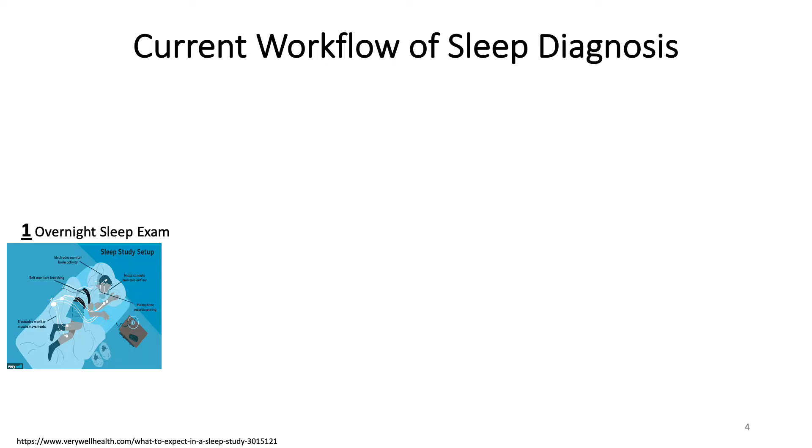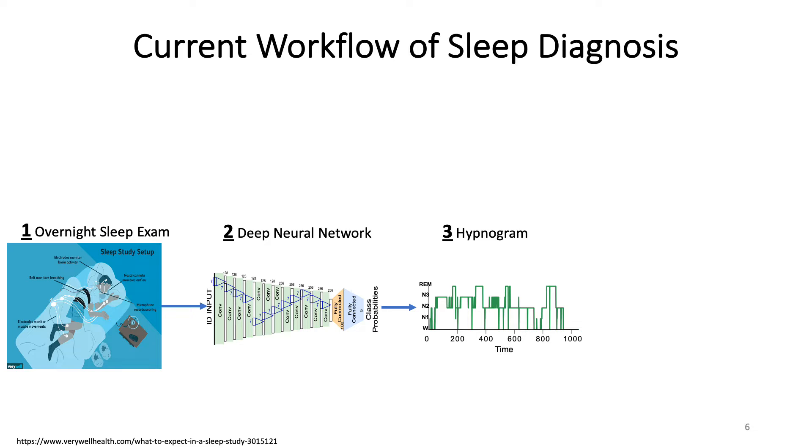Let us look at our current workflow for sleep diagnosis. The current workflow consists of four steps. In the first step, a patient undergoing the sleep exam visits a sleep center where they are hooked with several whole body sensors. These sensors gather data overnight as the person sleeps. In the morning, this dataset is analyzed using a deep neural network which predicts one among five sleep stages for each time segment. These predictions are compiled into a hypnogram. On the x-axis of the hypnogram you can see the progression of time, and on the y-axis you can see one among the five sleep stages. This hypnogram is then used by a team of doctors as a tool to make the diagnosis about the underlying sleep disorder.